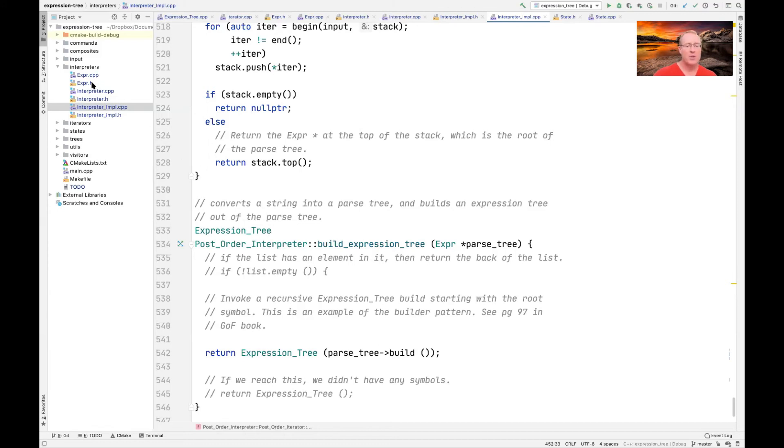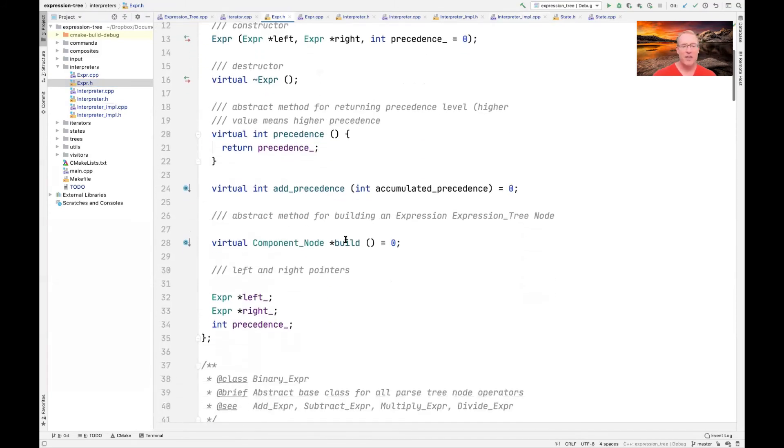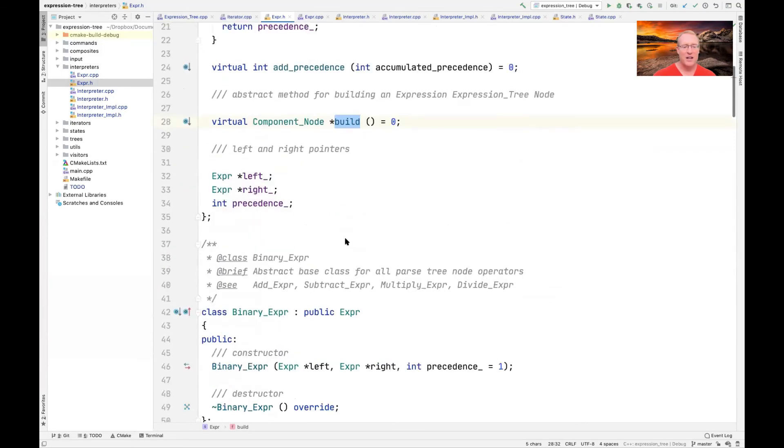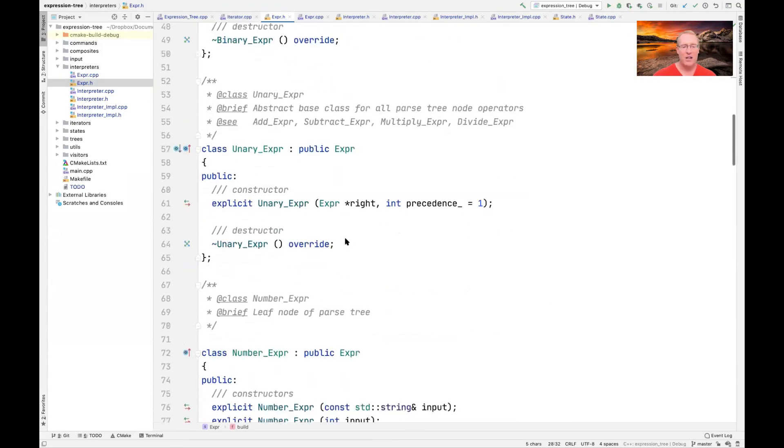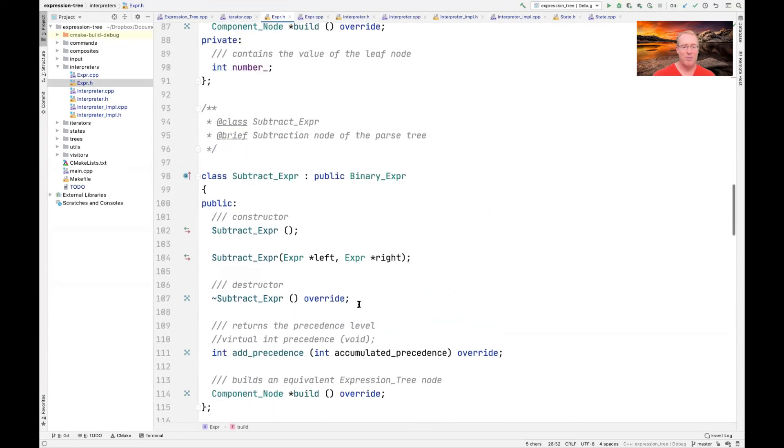If we go up to the expert.h file, you'll see that there's a build method defined in the expert abstract base class, and then all the various concrete classes below, like number expert has a build method that overrides the one in the abstract base class.